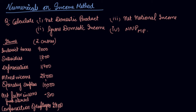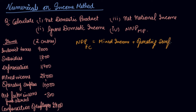From the income method, what do you get? You get your NDP at FC, which includes your mixed income — this was the formula — plus operating surplus, plus your compensation of employees.